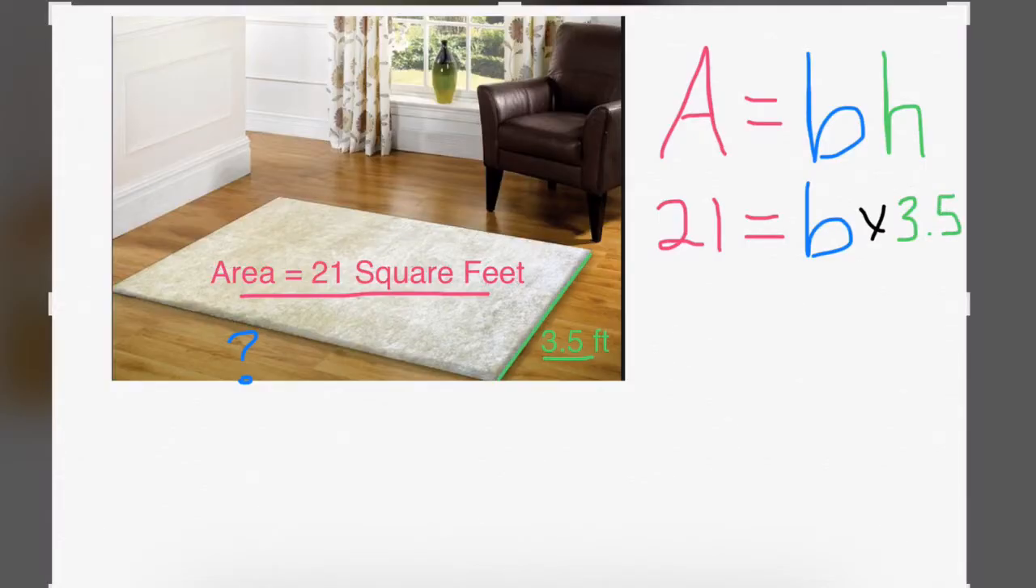We need to do inverse operation in order to solve, and the opposite of multiplication is division. So we divide both sides by 3.5 in order to keep the balance. Doing the math off to the side, so we can show how the decimal would move in order to solve this problem. That when we multiply, we definitely want to get a zero as the remainder. And that the base of this rug is 6. So this rug is 6 feet by 3.5 feet.